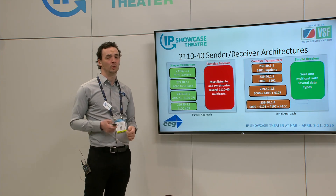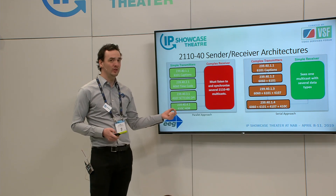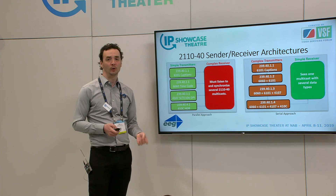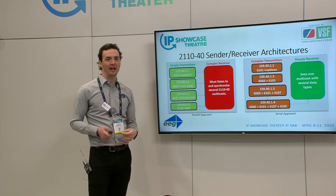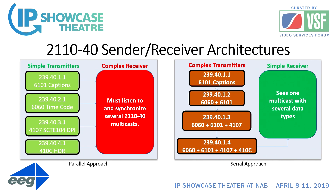On the other hand, if you have a simple SDI gateway that doesn't want to make complicated decisions about ancillary data and just wants to take a single dash-40 multicast — or maybe two if you have blue and amber networks — then you have a complex transmitter and a simple receiver. The transmitter needs to be more complex to produce the multicast streams additively: you'll have captions in the packet, and if a different device wants to add timecode, you add that and regenerate the packets without incurring a frame delay.